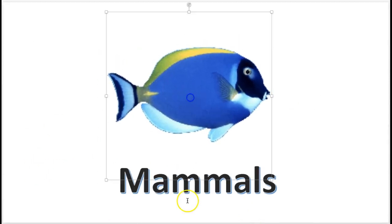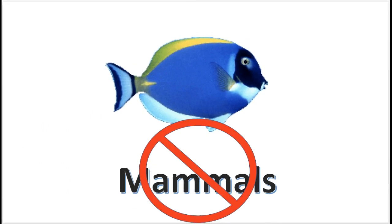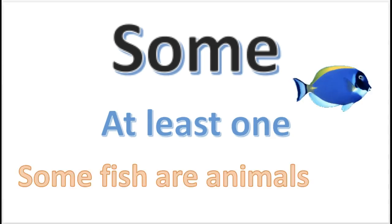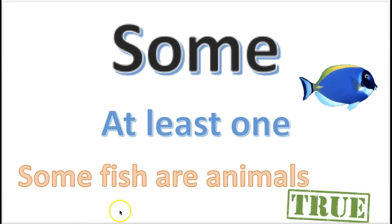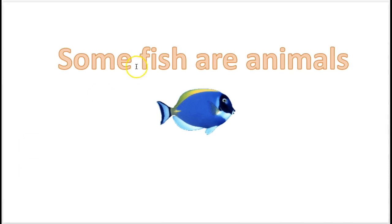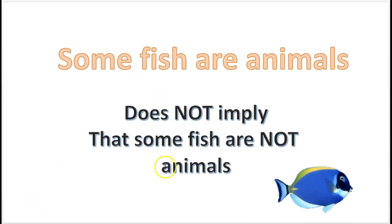No fish are mammals. Also, the word 'some' in logic means at least one. So the statement 'some fish are animals' means at least one fish is an animal — that's true. The statement 'some fish are animals' does not imply that some fish are not animals.